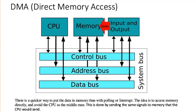The idea here is to put a hold on the CPU and try to get rid of this middleman. This is done by sending the same signals to memory that the CPU would send. So this is how it works.